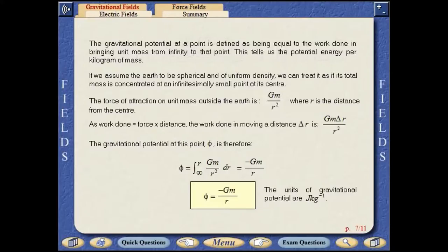The force of attraction on unit mass outside the Earth is gm over r squared, where r is the distance from the centre. As work done equals force multiplied by distance, the work done in moving a distance delta r is gm delta r over r squared.